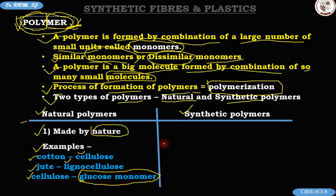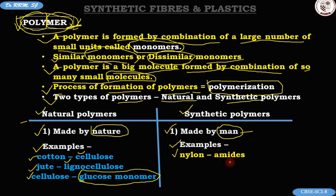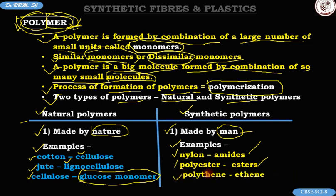Synthetic polymers are man-made polymers — they are made in factories by companies. Examples: nylon, which is a polymer of amides; polyester, which is a polymer of esters; and polythene, which is a polymer of ethene gas. Polythene is nothing but the polybag you use for carrying things from the market. That's all for now — please come prepared for the online class up to polyesters on page 46. We'll have a good discussion, see you there!